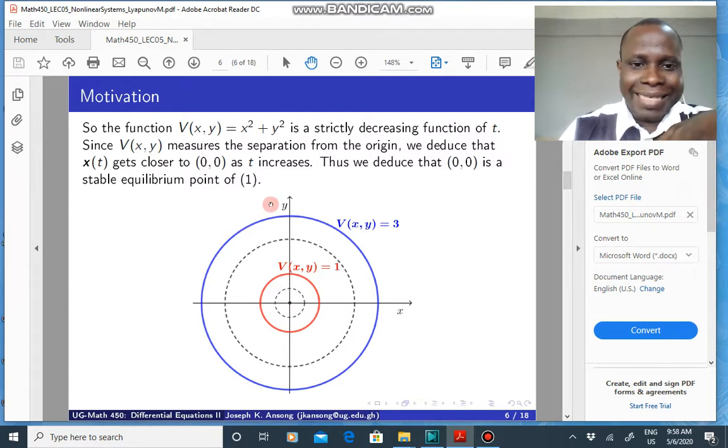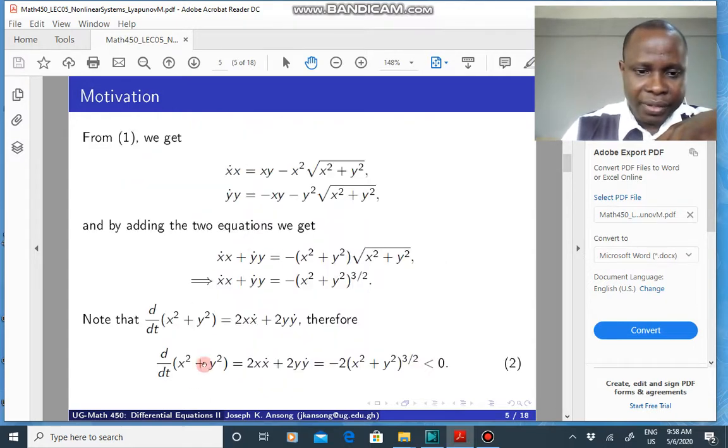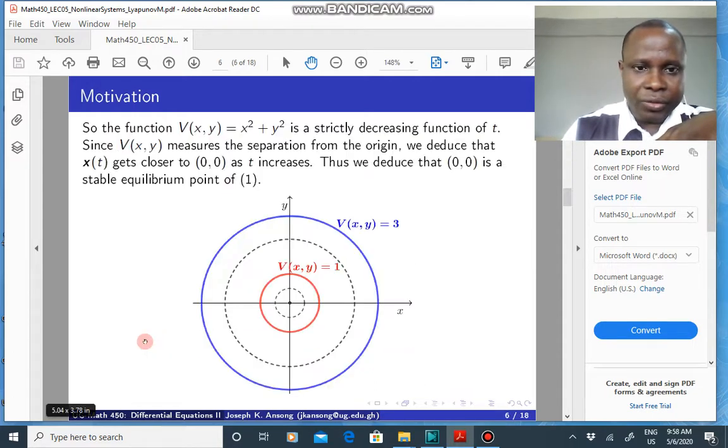Now, in this particular case, it's actually easy to prove that this function goes to zero with time. So if you go back to this, if you let this be V, x squared plus y squared is V, this will be V raised to the power 3 over 2. And you can solve that.